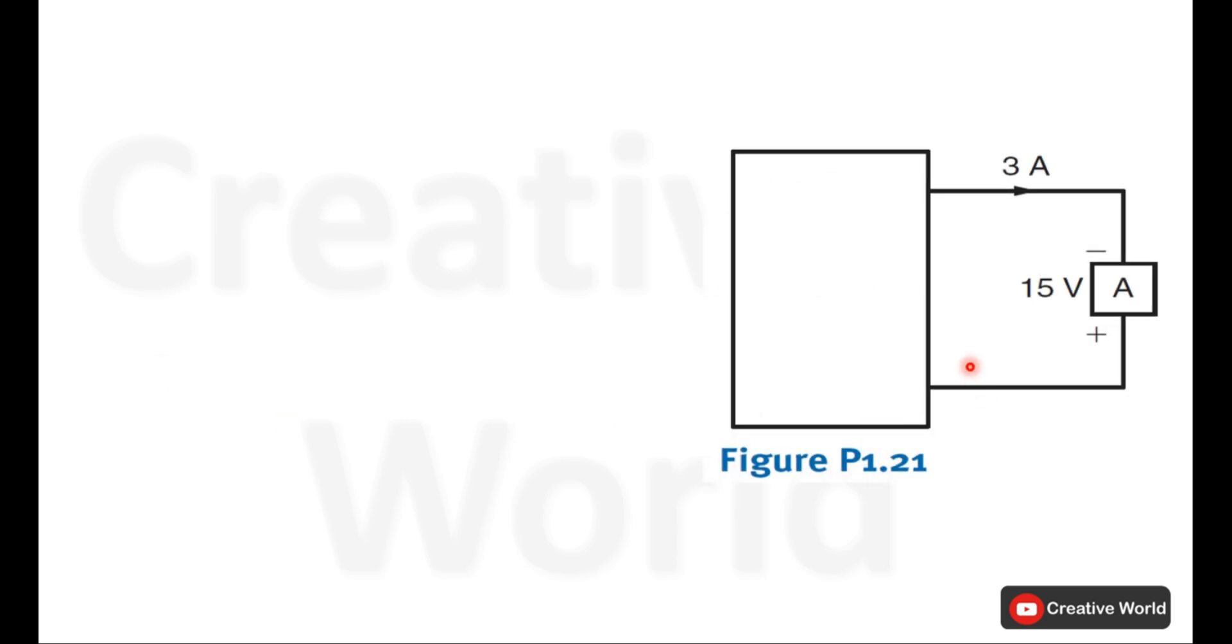Let's solve this scenario. Voltage across the element is given and current direction is also indicated. Current is 3A and the direction of current is highlighted in blue arrows.